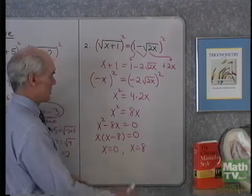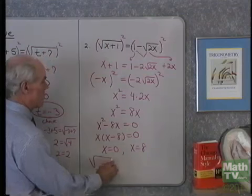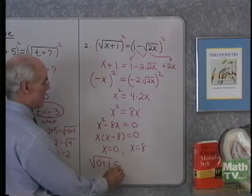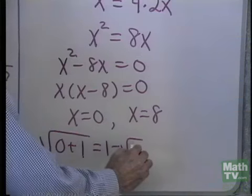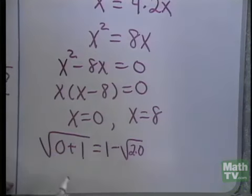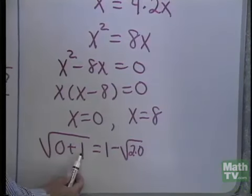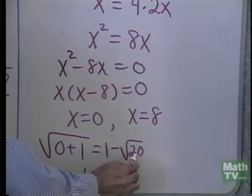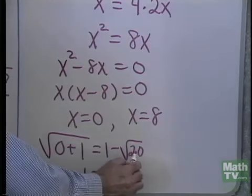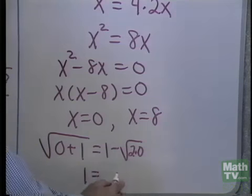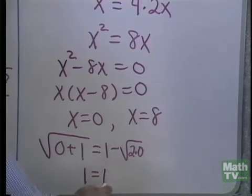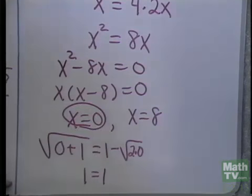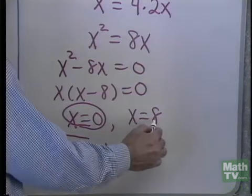I have to check each one in the original equation. Square root of 0 plus 1 — is that equal to 1 minus square root of 2 times 0? Square root of 0 plus 1 is 1, the square root of which is 1. And 1 minus square root of 0 is 1 minus 0, which is 1. So 1 equals 1 — that's a true statement, so x equals 0 is one solution.